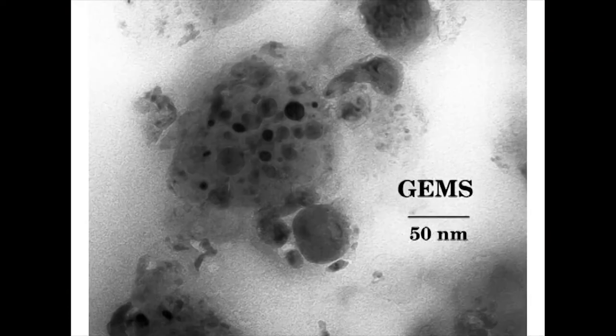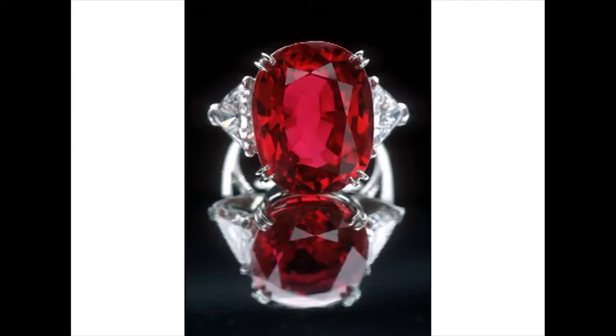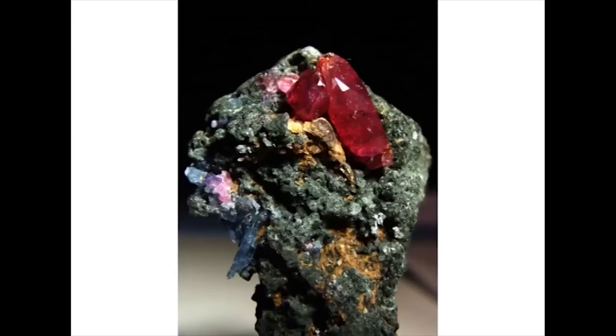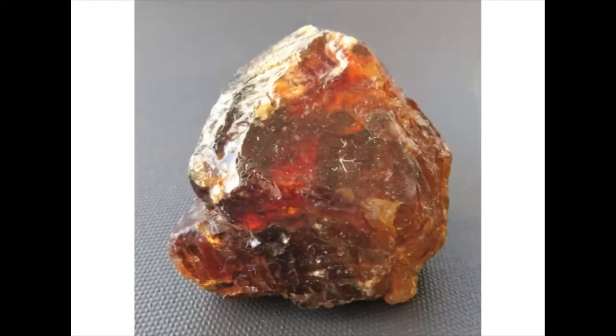Gem identification is basically a process of elimination. Gemstones of similar color undergo non-destructive optical testing until there is only one possible identity. Any single test is indicative only — for example, the specific gravity of ruby is 4, glass is 3.15 to 4.2 and cubic zirconia is 5.6 to 5.9, so one can easily tell the difference between cubic zirconia and the others, but there is overlap between ruby and glass. As with all natural materials, no two gems are identical; the presence of chemical impurities and substitutions along with structural imperfections create individuals.